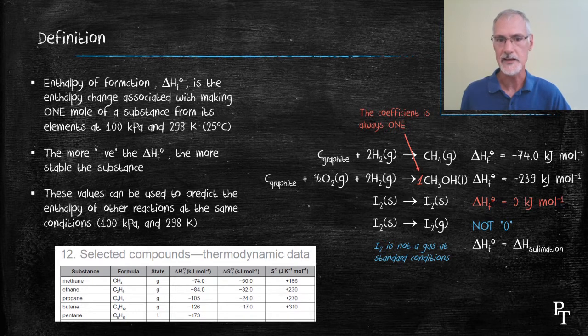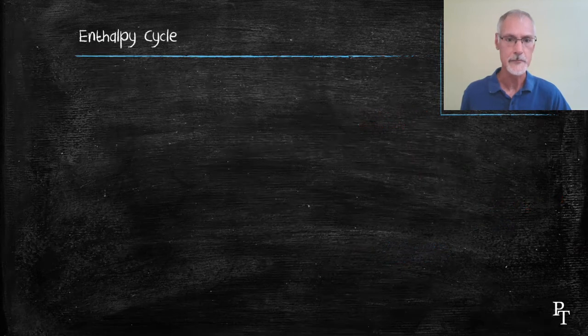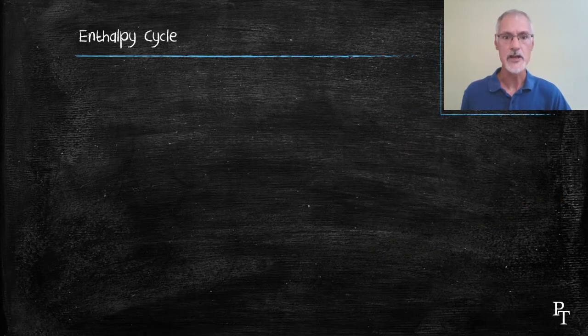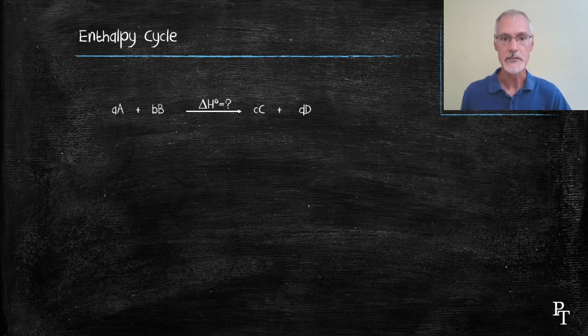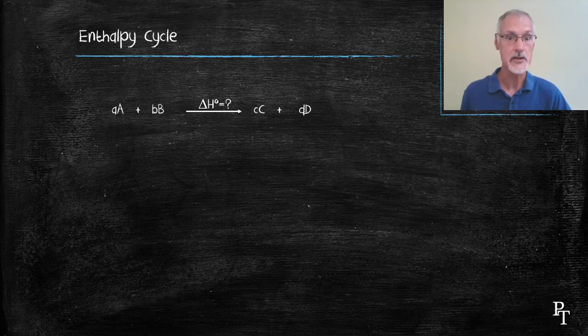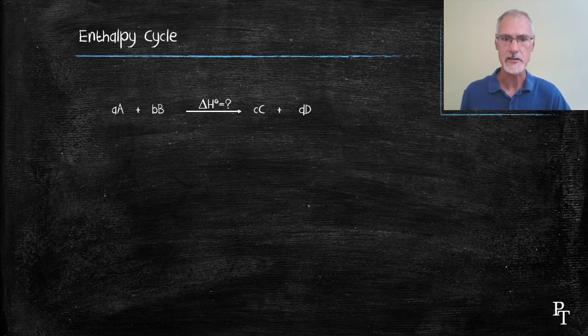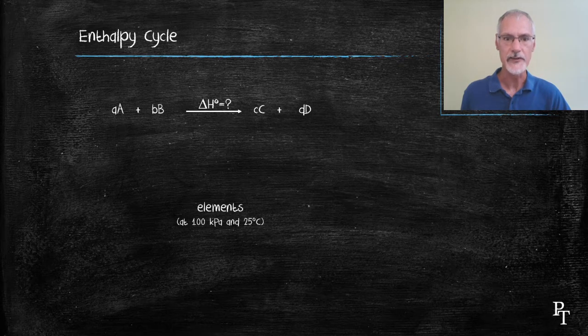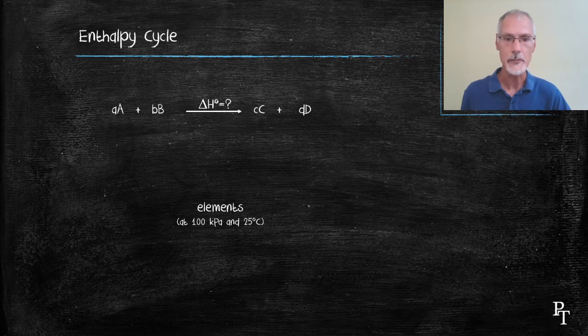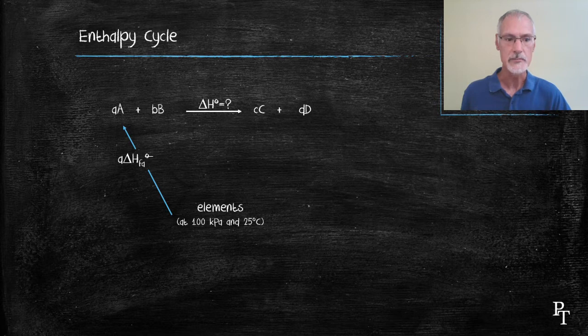Let's look at the theory behind that by using an enthalpy cycle. Suppose we have some generic reaction, A plus B making C plus D, and it has various coefficients, and we would like to know what the heat is associated with that particular reaction. We know from heats of formation the energy it takes to start off with elements and turn it into any one of these substances, whether it be A, B, C, or D.